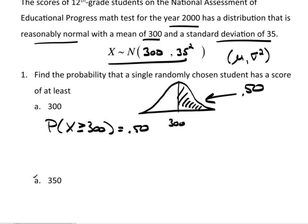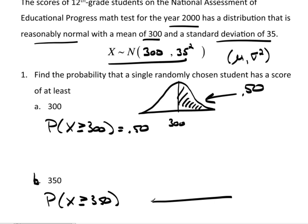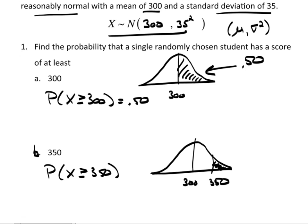Now for part B, I want to know the probability that x is at least 350. The probability statement is: P(x ≥ 350). I draw my curve — always draw pictures. 300 is in the middle, 350 is up here somewhere, and I am looking for that tail probability to the right.